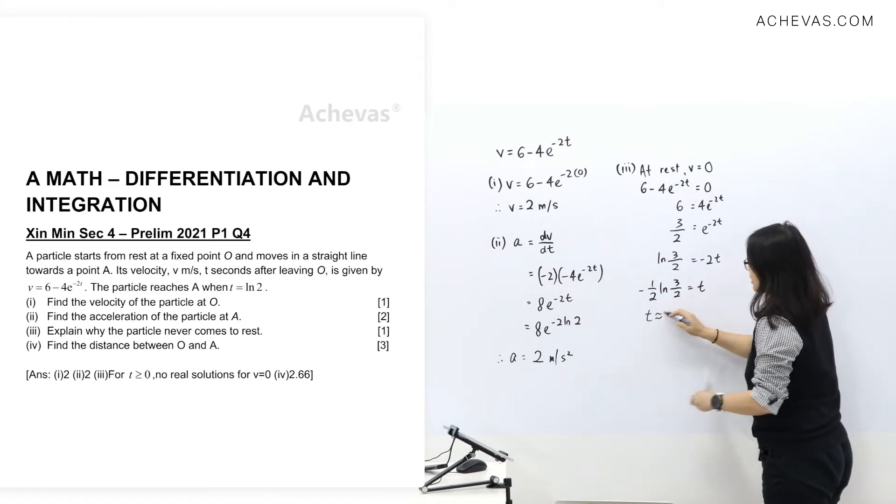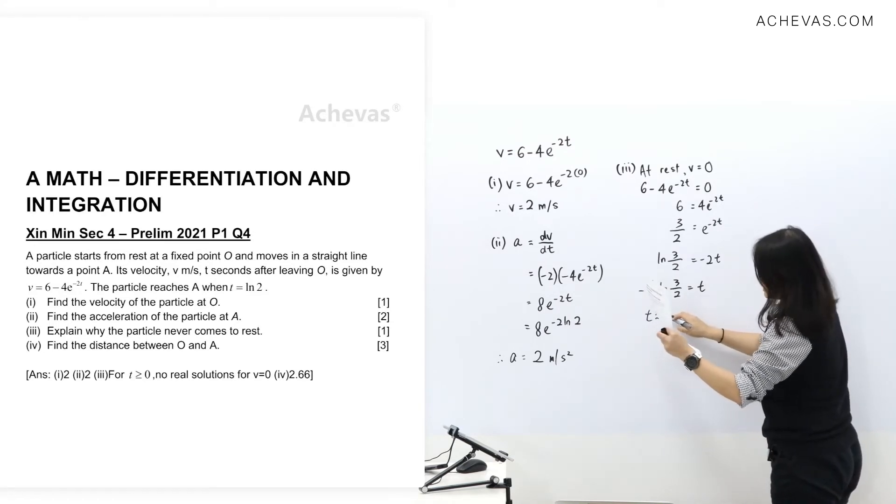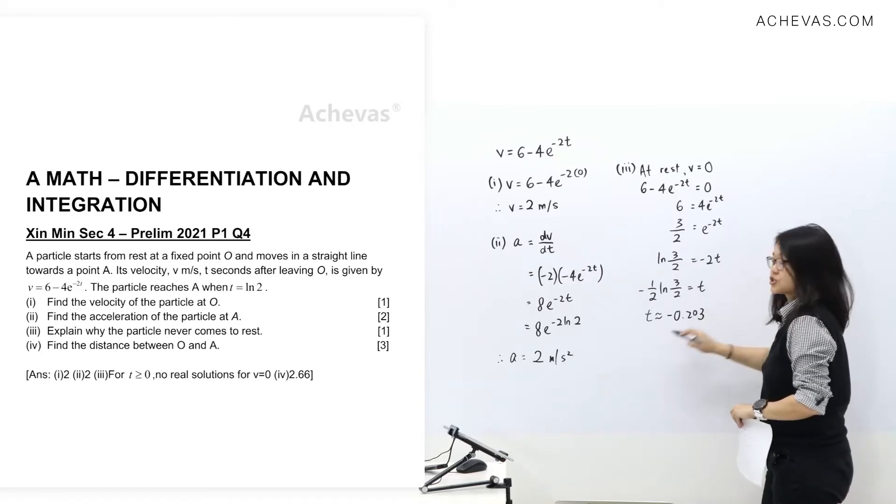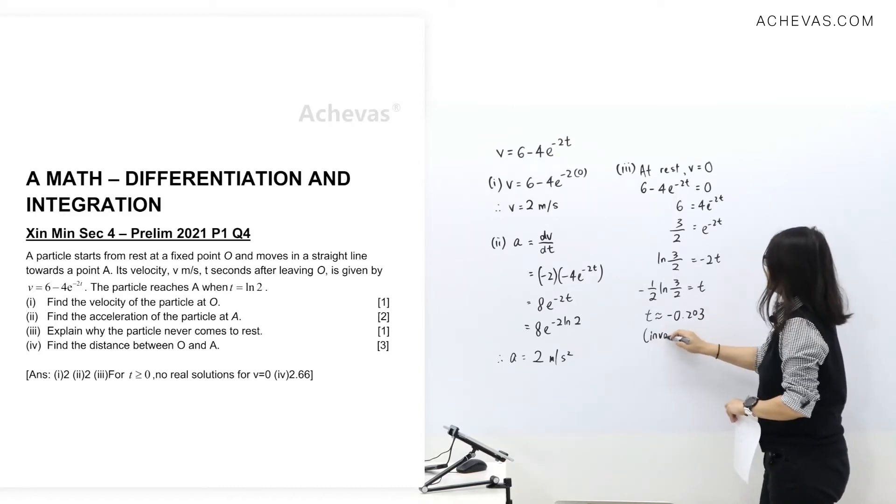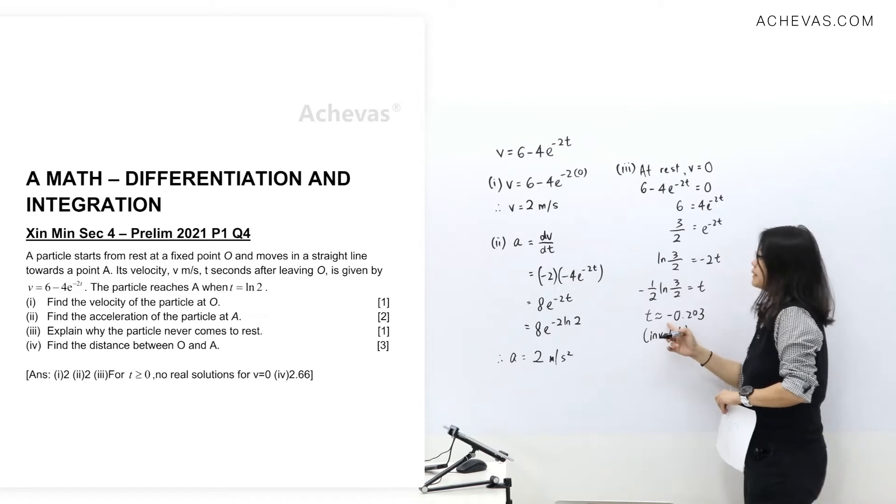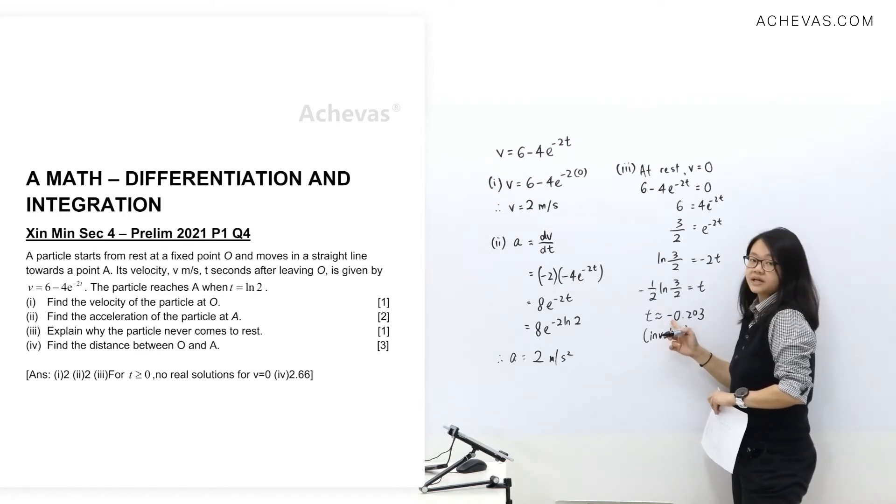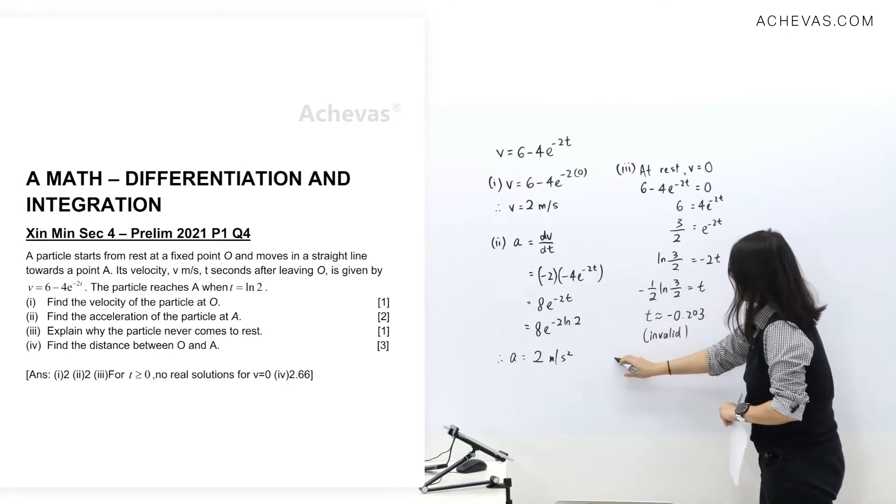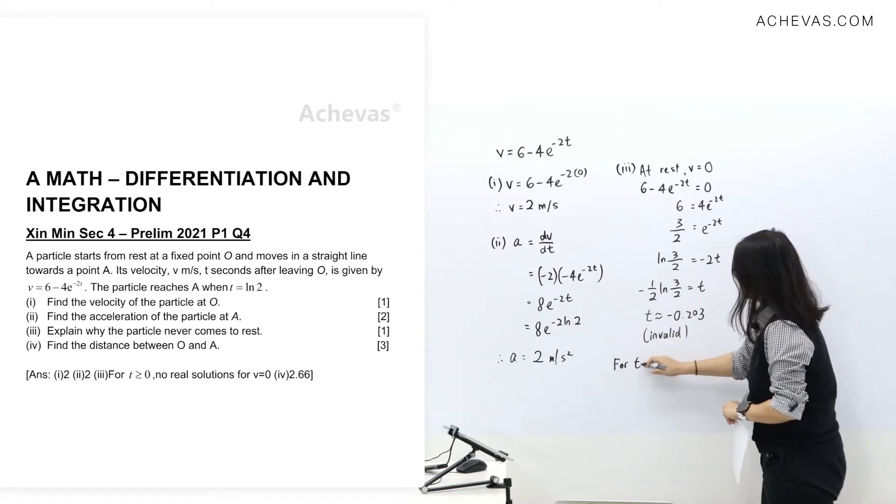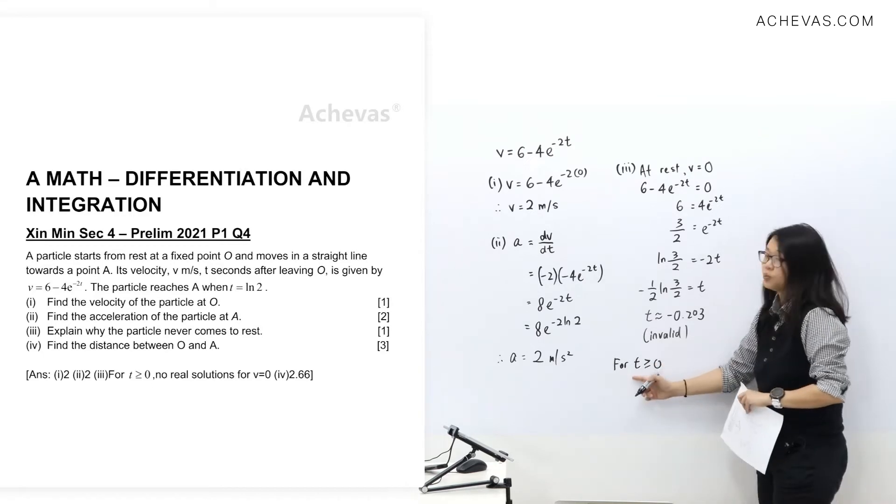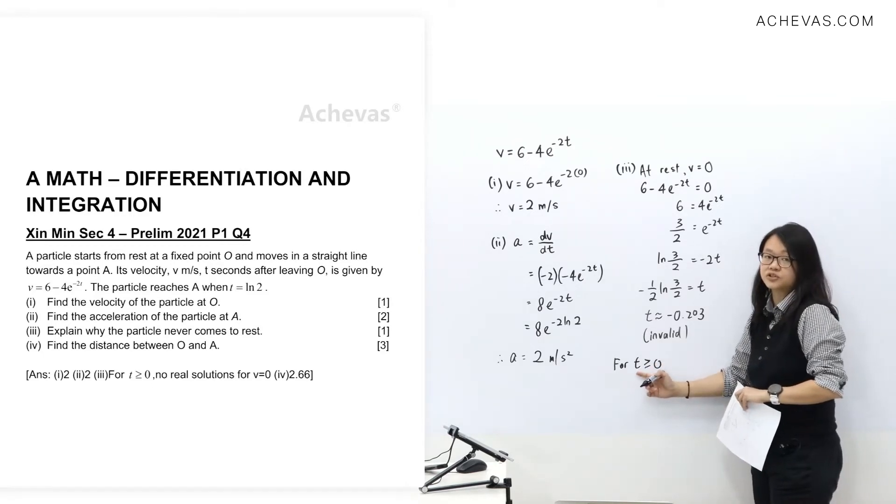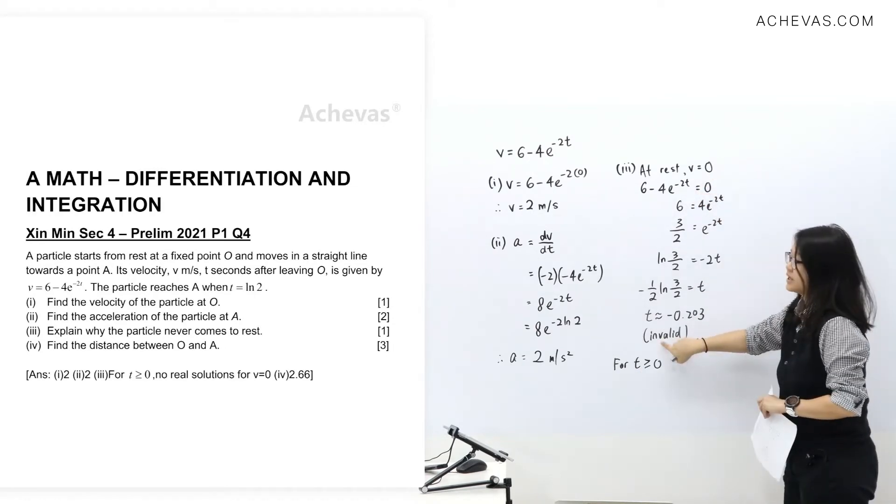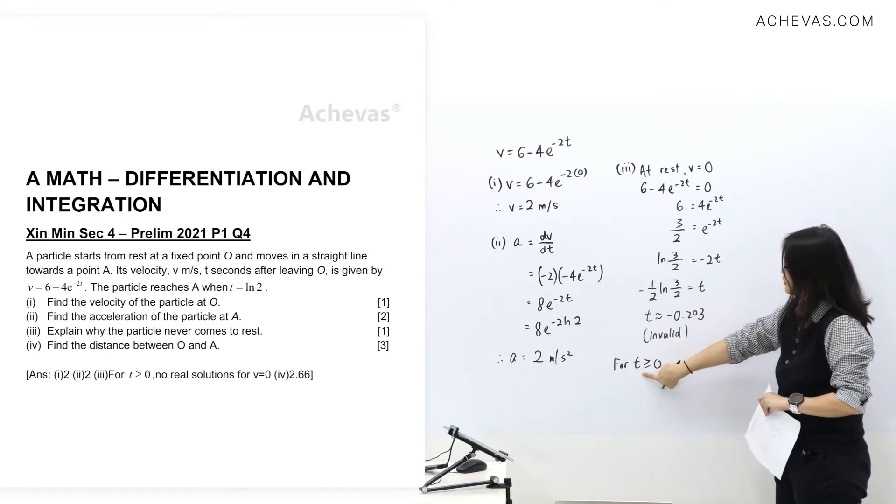So T value, you roughly get something like negative 0.203, which is invalid in this case because T is time. We cannot get time as negative. So there's no solution. So we're going to write here, for T more than equals to 0.